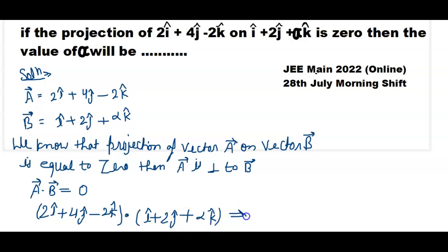And we know that in dot product, i dot i is equal to 1, i dot j is equal to 0, and i dot k is equal to 0. So 2 times 1, I got 2.